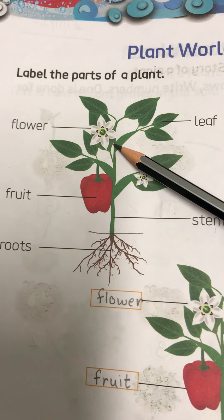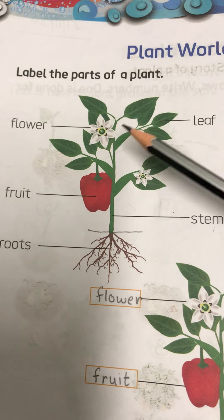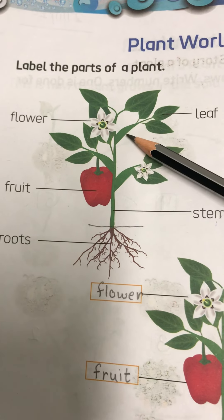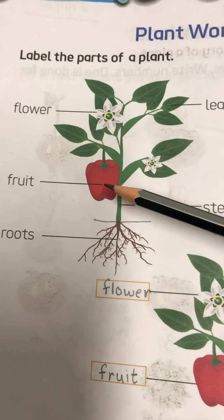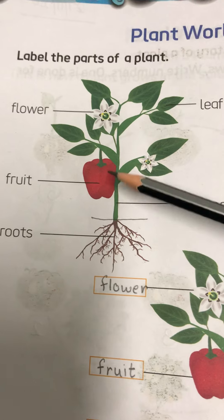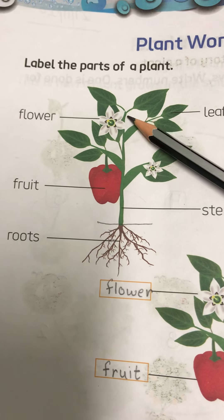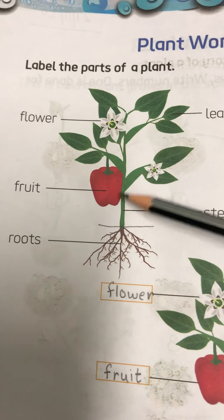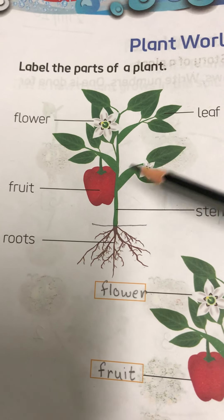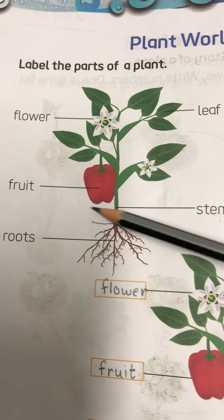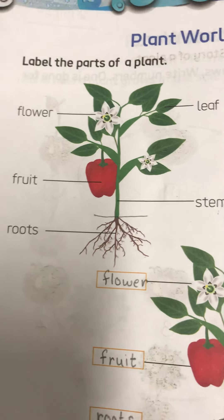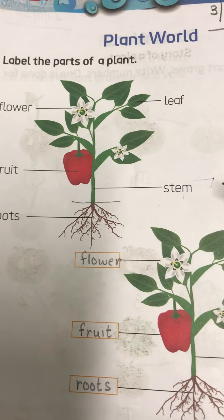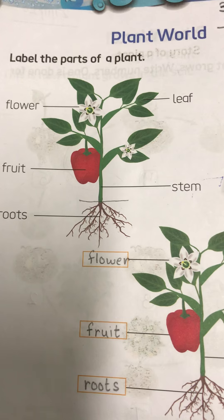Many flowers develop into delicious fruits that are eaten by us. Flowers are the beautiful part of the plant and produce seeds that can be grown again into a new plant. Next comes the fruit — many flowers grow into yummy fruits that we eat.